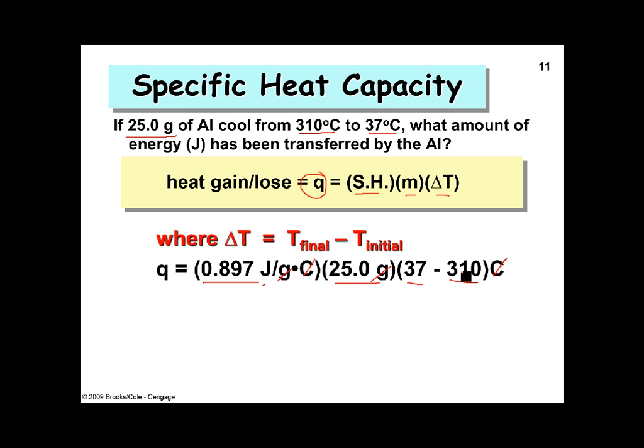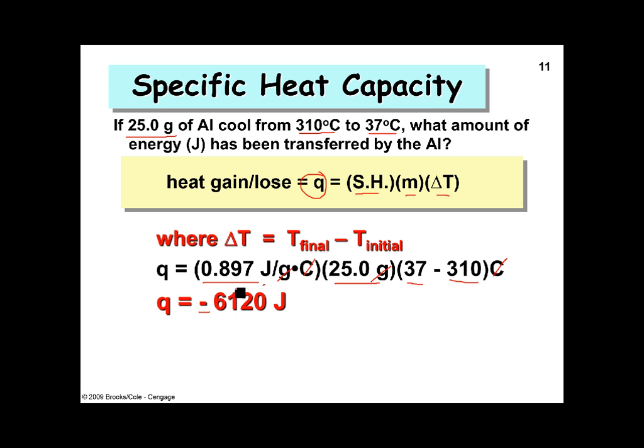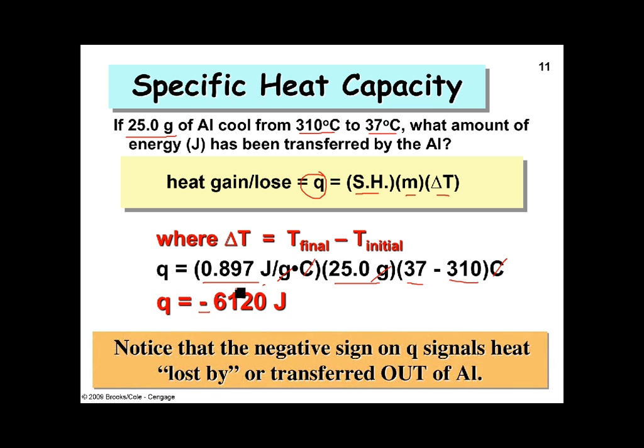Do the subtraction, you get a negative number, multiply by 25, multiply by 0.897, you get 6,120 minus. That's the direction of energy that's flowing. It was flowing out, because it cooled down, and the heat left it. That's what the negative means. It left, or it was transferred out of the aluminum, and it went somewhere. In today's lab, that's going to go into water. So this just gives you an idea how to do a calculation for just looking at a piece of metal that was cooling down. Of course, we could have done it heating up, and really what it would have changed is the sign.